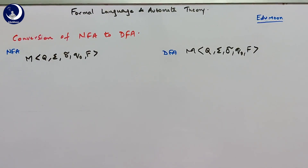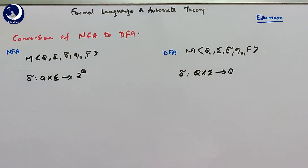Both NFA and DFA have five tuples: Q, sigma, delta, q0, and F, where Q is the set of states, sigma is the set of input symbols, q0 is the initial state, and F is the set of final states. The only difference between NFA and DFA lies in the delta function. In NFA, delta is Q cross sigma equal to 2 power Q, and in DFA it is Q cross sigma goes to Q.